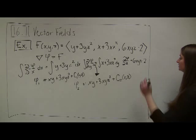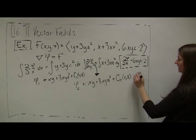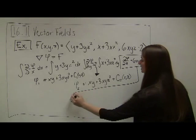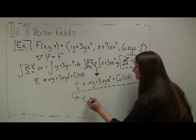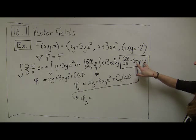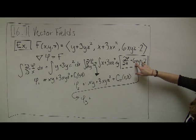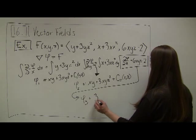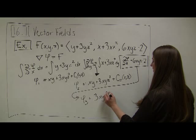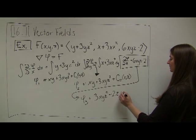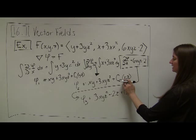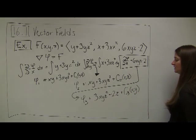For the final chunk, I take the anti-derivative of 6xyz minus 2 with respect to z, treating x and y as constants. The anti-derivative of 6xyz with respect to z gives 3xyz², and the anti-derivative of 2 with respect to z gives 2z. So φ₃ equals 3xyz² minus 2z, plus a constant that is a function of x and y.